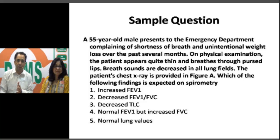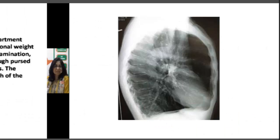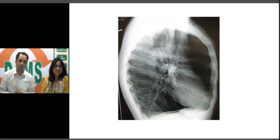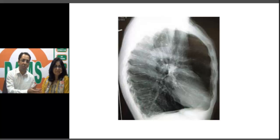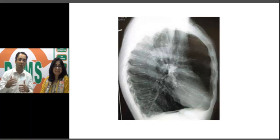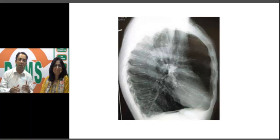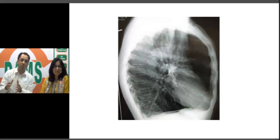Let us look at the chest X-ray given in the question. This is a very typical USMLE question where they provide clinical information alongside a visual — here a chest X-ray — while the actual question is about physiology, specifically spirometry. Instead of directly asking about spirometric findings as in an Indian exam, they present a clinical history and you have to identify the disease based on clinical and X-ray clues.